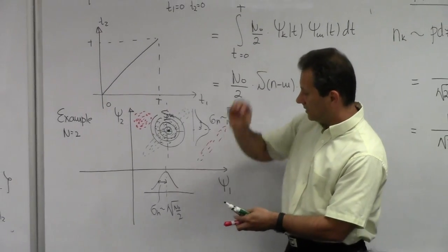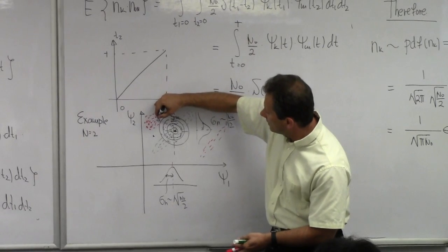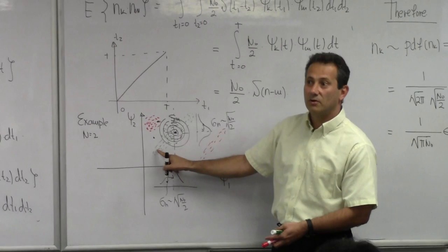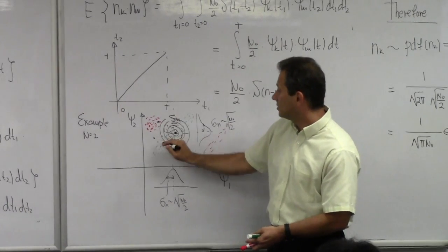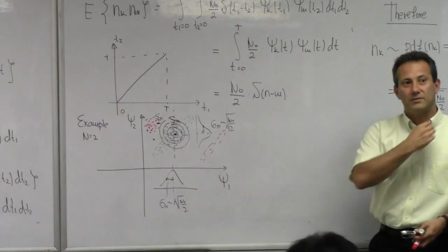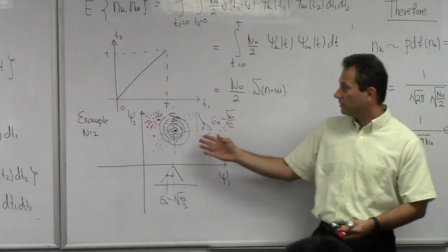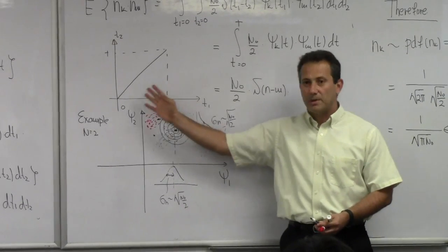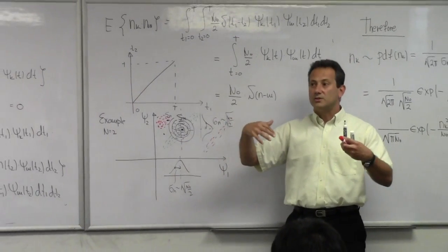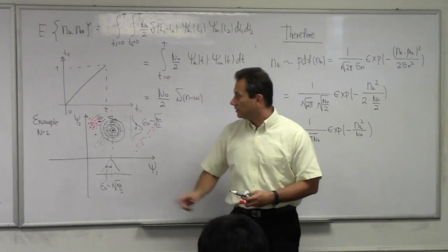If you send a symbol and it ends up here, but the next nearest signal in your constellation is this other point, you make an erroneous decision — you say it's not this point that was sent, but that other one. So what we're after is: what is the probability of that happening? You can see intuitively this will depend on how your constellation looks, what is the distance between symbols, and what is the energy of your symbol relative to the noise. That's what we need to quantify.